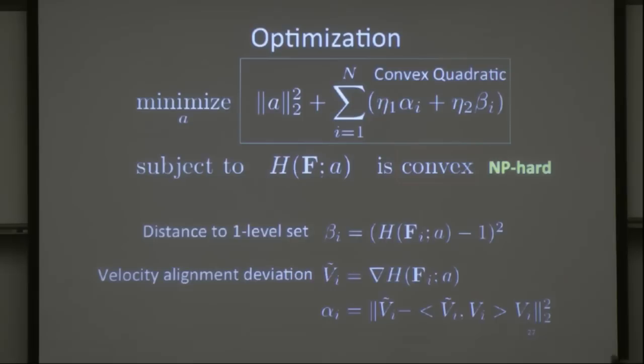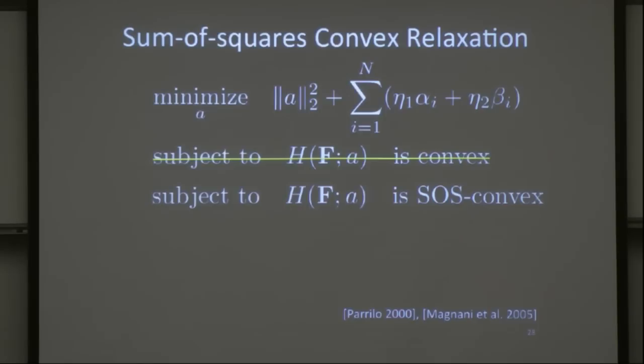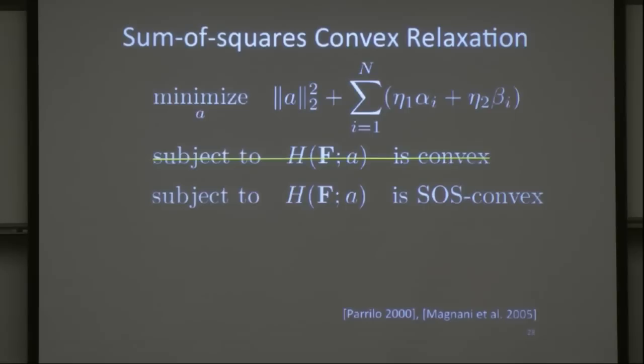However, constraining a general polynomial to be convex is proven to be NP-hard. Fortunately, if we constrain ourselves to a specific family of convex polynomials — namely sum-of-squares convex — the entire problem can be reduced to semi-definite programming, which is convex. You can further extend this to an online setting where you collect data in a streaming fashion and update the model online.